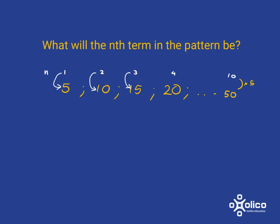So what will the nth term be? It'll just be n multiplied by 5 and we know we can write that nicely as 5n.